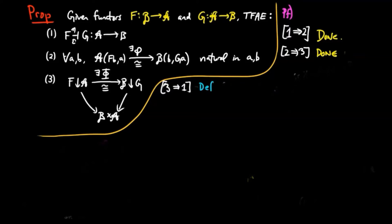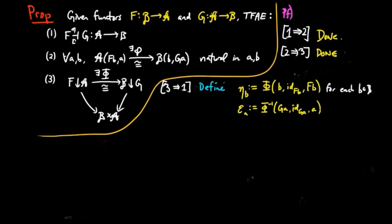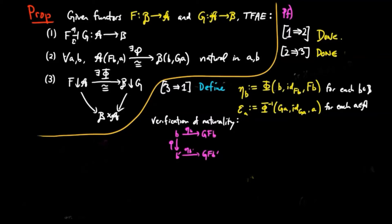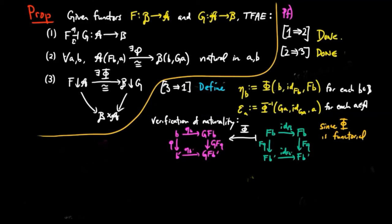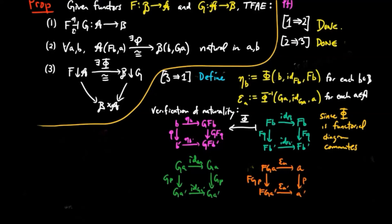Finally, we prove 3 implies 1. We define eta_B to be big Phi of the identity on FB for each object B, and we define epsilon_A to be big Phi inverse of the identity on GA for each object A. We need to verify that these define natural transformations. Given a B-morphism Q, we need to show that the following diagram commutes. But this diagram equals Phi acting on the morphism in F over A between the identity on FB and the identity on FB'. Therefore, since big Phi is a functor, the diagram commutes. Similarly, given an A-morphism P, the naturality of epsilon follows analogously. Therefore eta and epsilon are natural transformations.